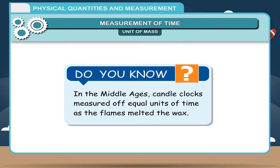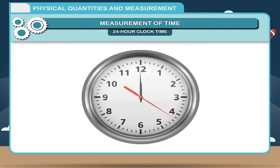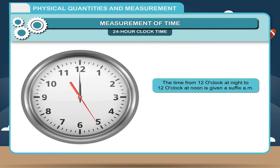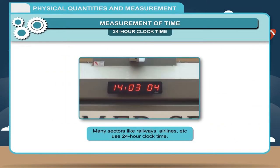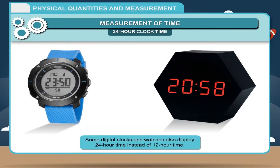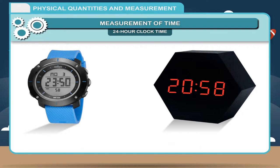Do you know? In the Middle Ages, candle clocks measured equal units of time as the flames melted the wax. Twenty-four hour clock time: Commonly, we use a twelve-hour clock. In such a clock, the time from 12 o'clock at night to 12 o'clock at noon is given the suffix 'am', and the time from 12 o'clock noon to 12 o'clock night is given the suffix 'pm'. Many sectors like railways, airlines, etc., use the twenty-four hour clock. In this clock, time is not repeated on the same day and no a.m. or p.m. is used.